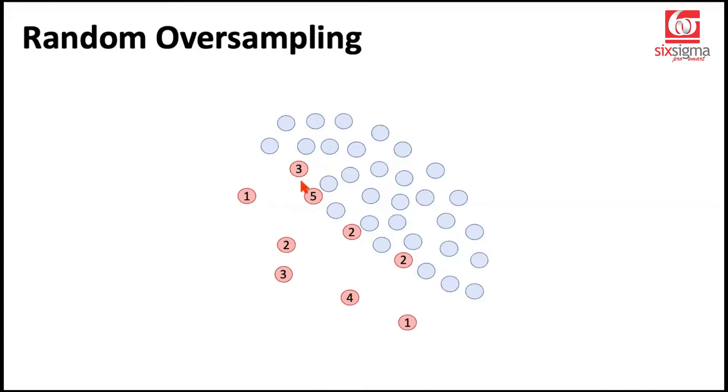So what you end up getting after doing that is something like this. So these counts basically represent the number of times a particular observation has been selected. So for example, this observation exists three times in your data. This observation exists five times in your data. Originally, it was just existing once. So some of these observations still exist just once, but a lot of these observations have been repeatedly collected.